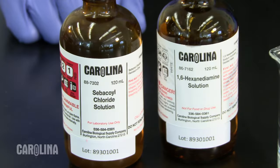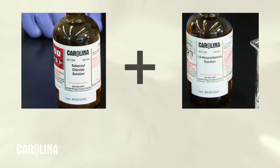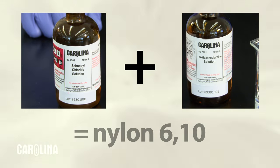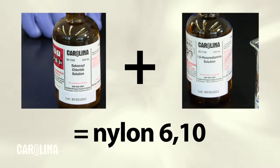When 1,6-hexanediamine combines with the sebacoyl chloride, we form repeating amide bonds, creating a polymer known as nylon-610.